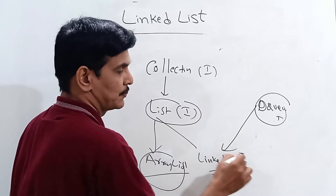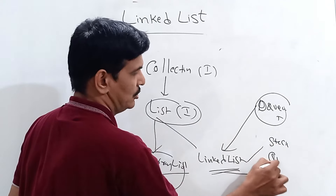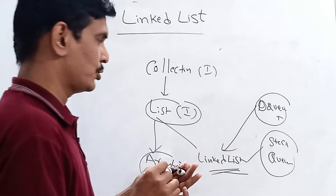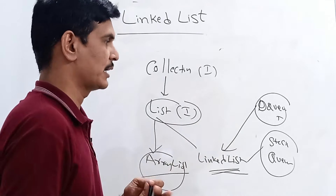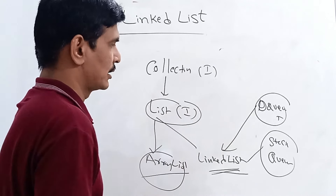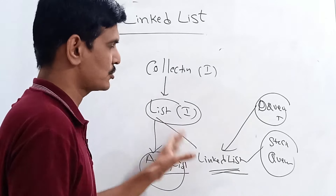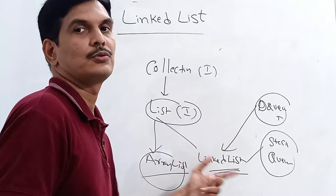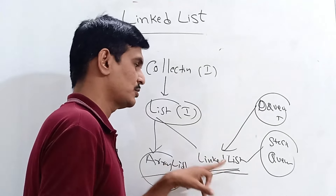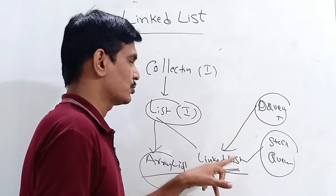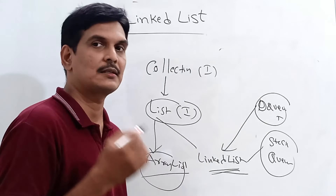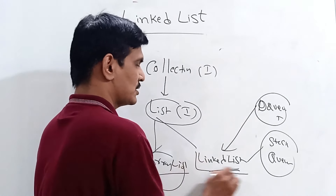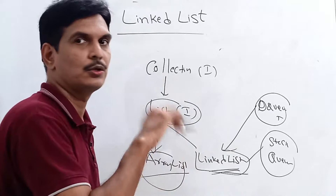LinkedList is most often used to implement stacks and queues. It has additional methods specific to those data structures, coming from the Deque interface. Apart from the normal List interface methods, LinkedList has linked-list-specific methods for adding, deleting, and getting elements, especially useful when implementing stacks and queues.